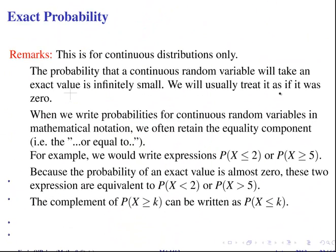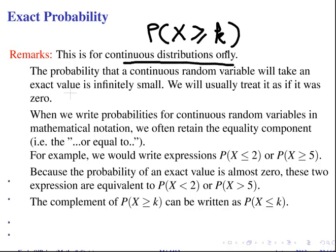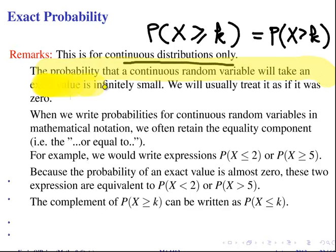Now, just as an important remark, this is to do with continuous distributions only. The probability of x greater than or equal to k is pretty much the same as the probability of x greater than k. The reason is that the probability that the continuous random variable will take an exact value is infinitely small and we usually treat it as 0. So that's why the statement I have written up there at the top is valid.